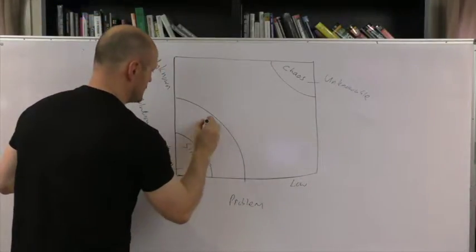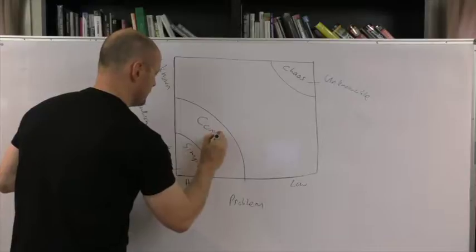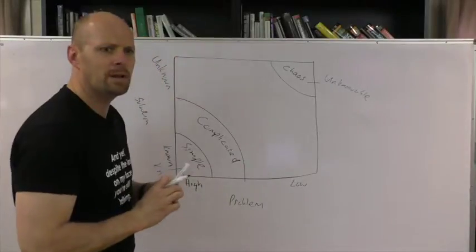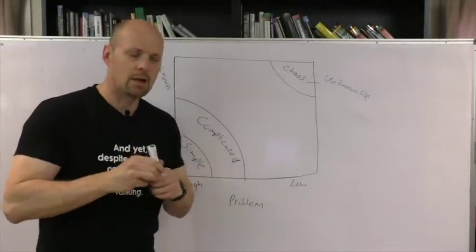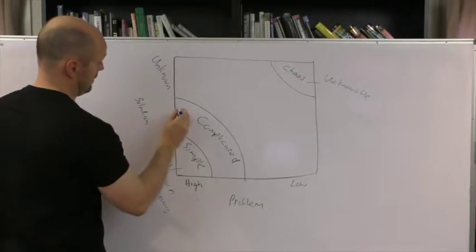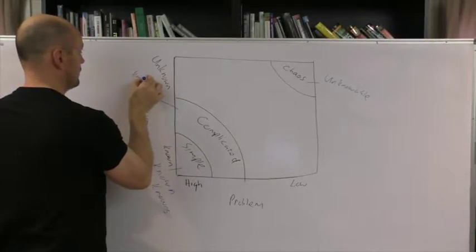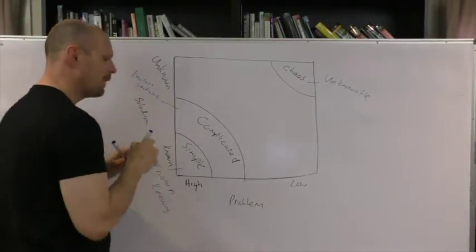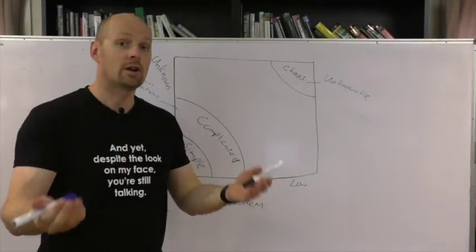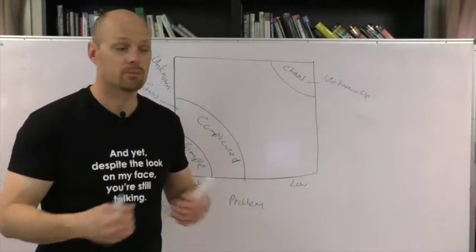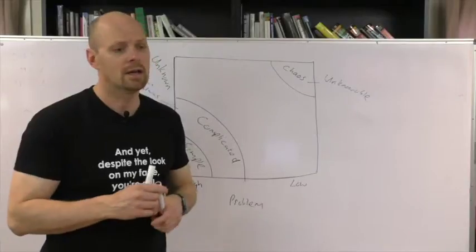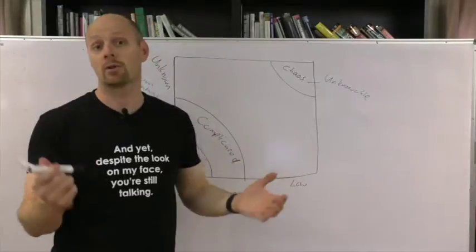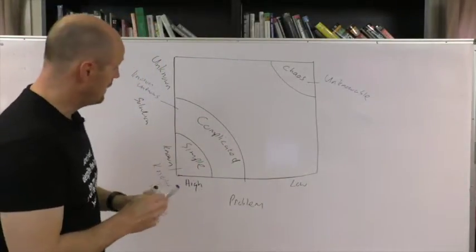the next level, which is referred to as complicated. The complicated space is known unknowns - we're full of knowns this time. This tends to be fairly complicated stuff, but somewhere out there we know how to solve it. This could be building an aircraft, servicing an aircraft, building a car. Somewhere out there somebody has the expertise we can tap into. We may not have it in our organization, but we know it's sitting out there. Then finally we